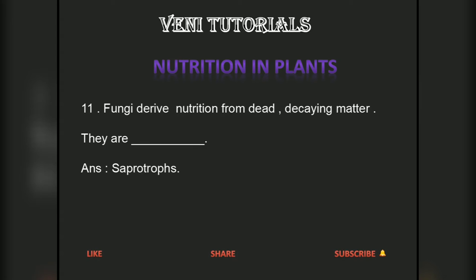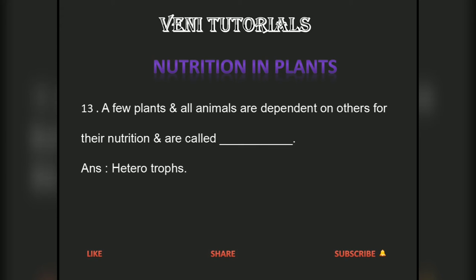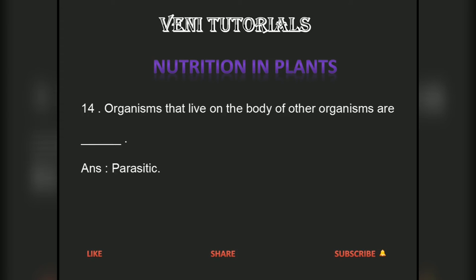Fungi derive nutrition from dead and decaying matter. They are heterotrophs. Organisms that cannot make their own food and depend on others are called heterotrophs. Organisms that live on the body of other organisms are parasitic.